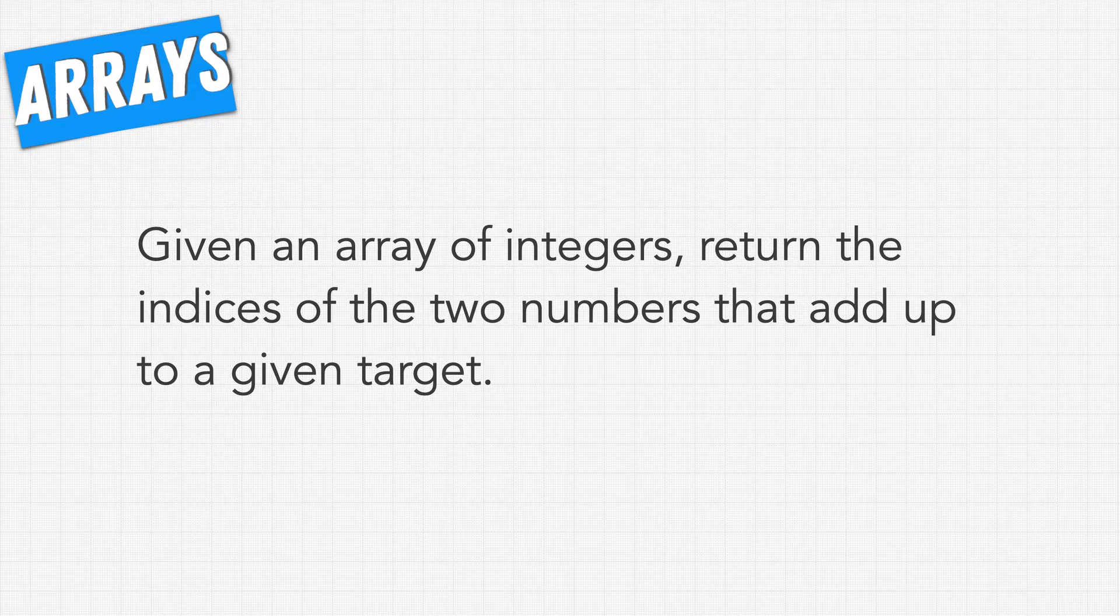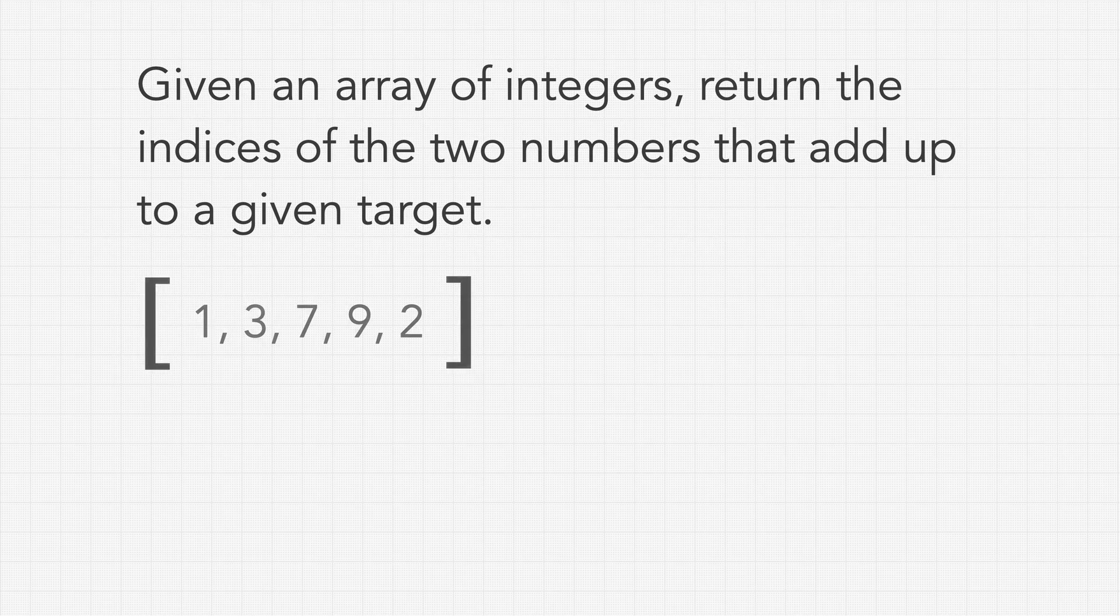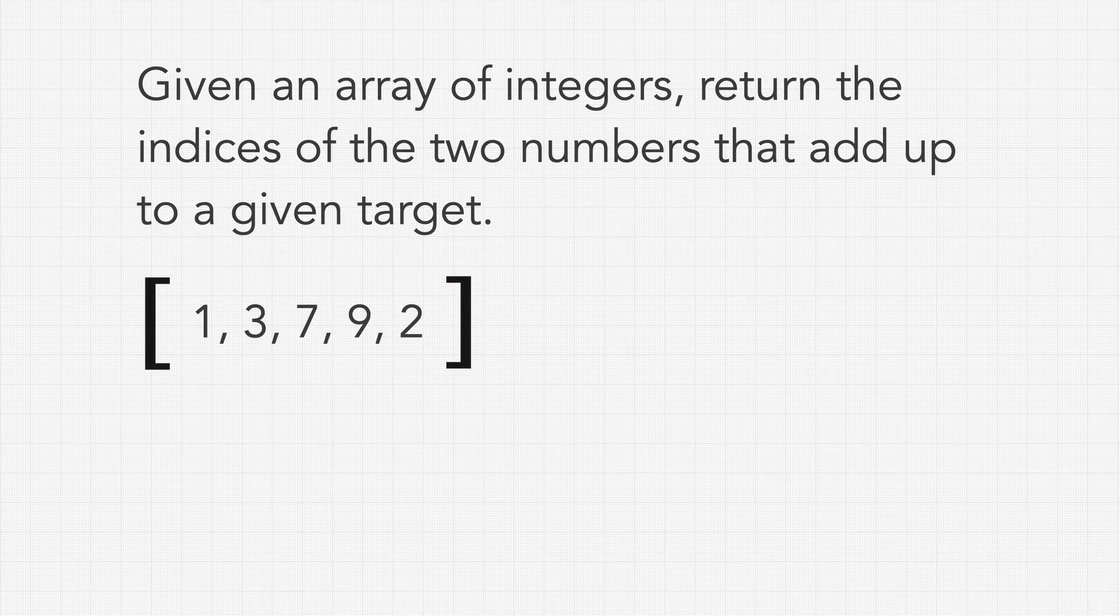So let's see what the question says. Given an array of integers, return the indices of the two numbers that add up to a given target. So what does that mean? We're gonna get two things. The first is some array where inside is just some numbers. Integers just mean whole numbers, meaning no decimal places, and then the other thing we're gonna receive is a target value, another integer. What we have to do is pick two numbers inside of this array that will add up to this target of 11.